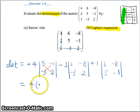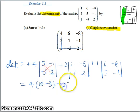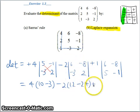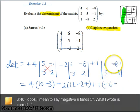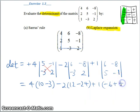So, I have 5 times 2 minus negative 1 times negative 3. Do the same. 6 times 2 minus negative 8 times negative 3. 6 times negative 1 minus negative 8 times 5.